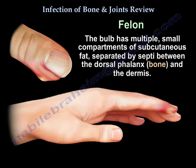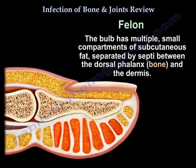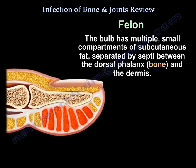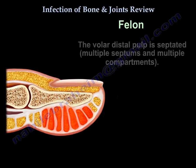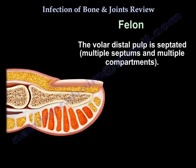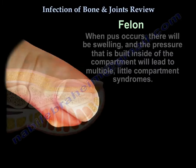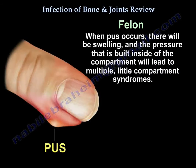The bulb has multiple small compartments of subcutaneous fat separated by septi between the dorsal phalanx, the bone, and the dermis. The volar distal pulp is septated, with multiple septums and multiple compartments. When pus occurs, there will be swelling, and the pressure built inside the compartment will lead to multiple little compartment syndromes.